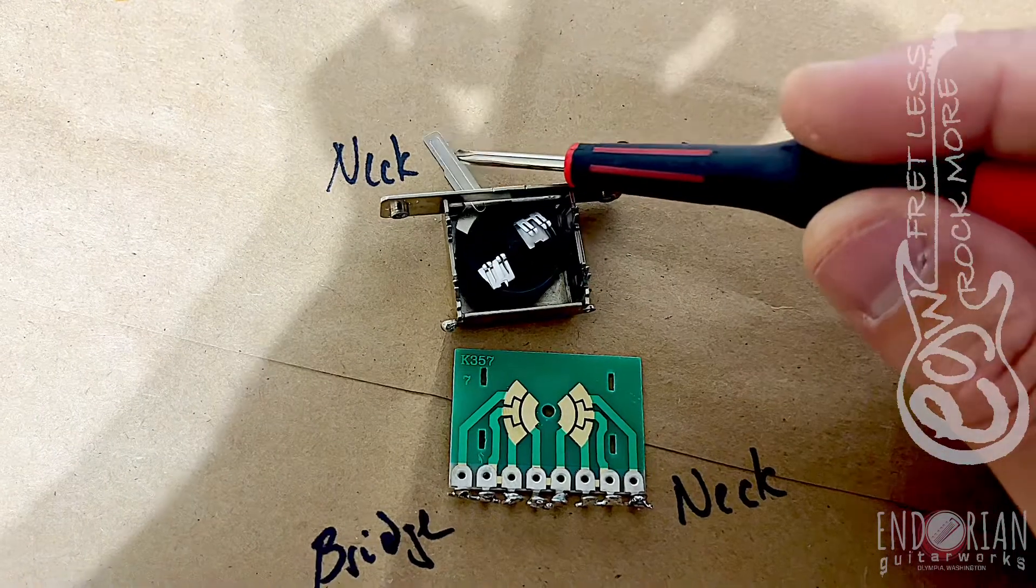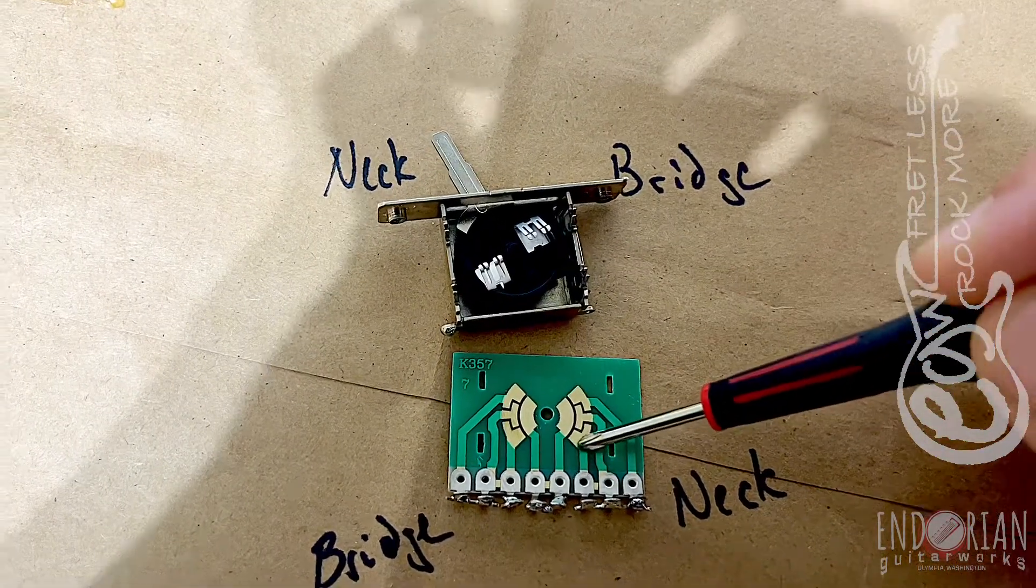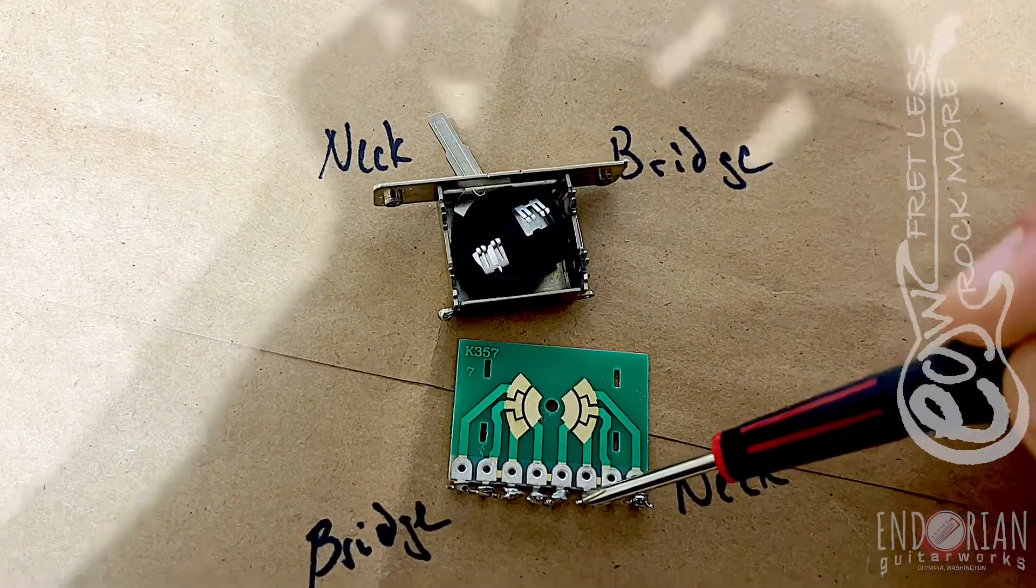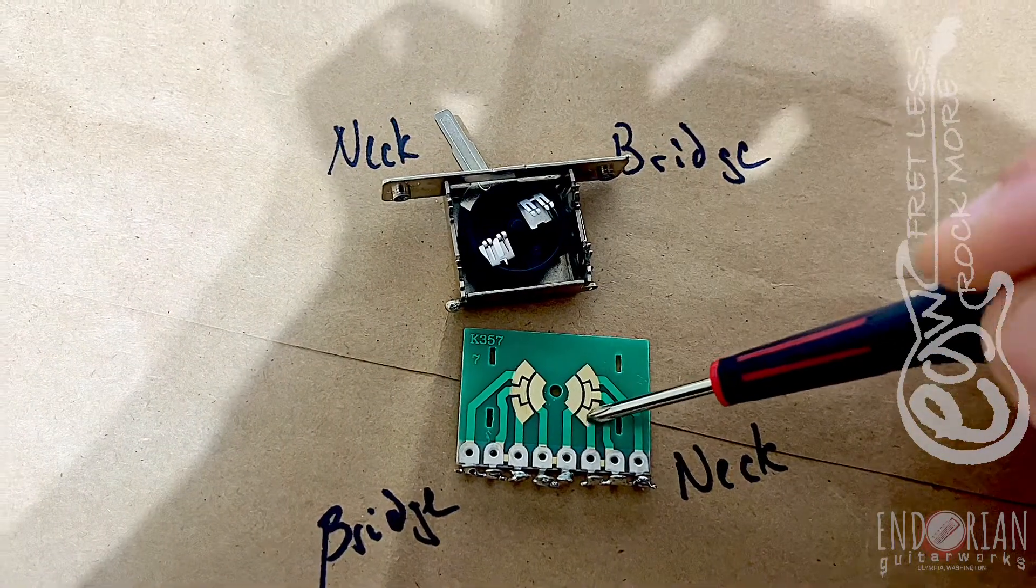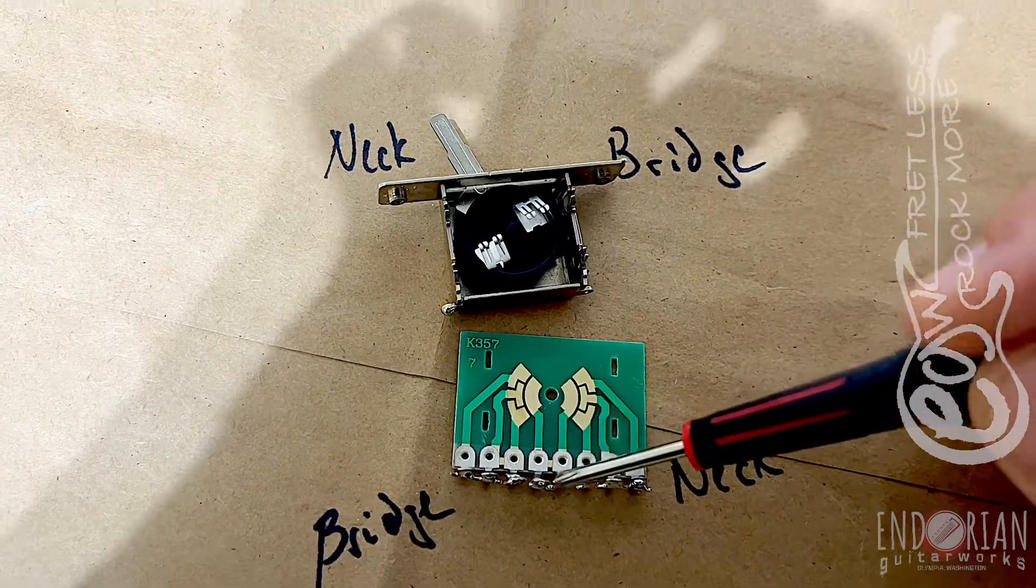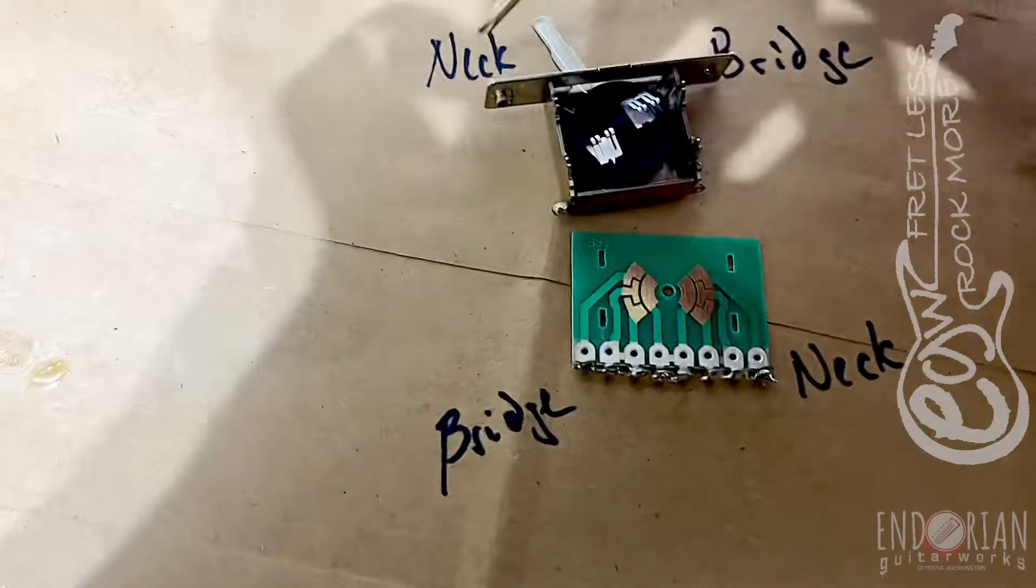When I'm in neck position, this contact is making contact here. So right here is where your neck pickup gets wired into. When you're in this position, that signal comes into the lug, to the plate, across the jumper, to this lug, and that goes to the output.